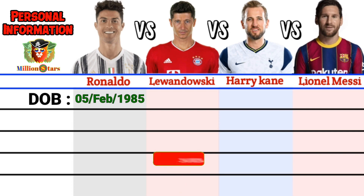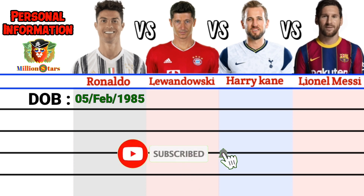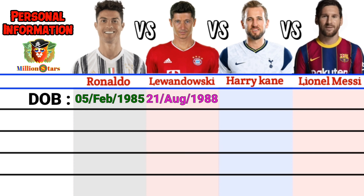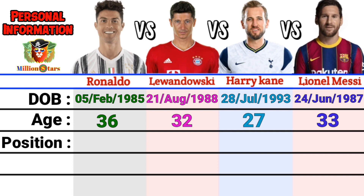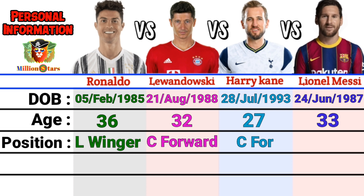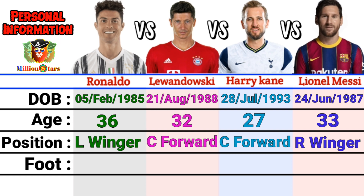Date of birth: Ronaldo February 5, 1985; Lewandowski August 21, 1988; Harry Kane July 28, 1993; Messi June 24, 1987. Age: Ronaldo 36, Lewandowski 32, Harry Kane 27, Lionel Messi 33. Position: Ronaldo left winger, Lewandowski center forward, Harry Kane center forward, Messi right winger.